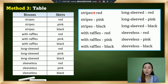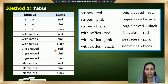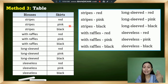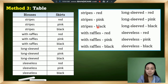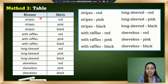Now let's proceed to the third method, which is making a table. As you can see, the listing method and the table method show the same pairs — stripes-red, stripes-pink, stripes-black, ruffles-red, and so on. The only difference is that the pairings are placed inside a table, separating blouses from skirts. The results are the same.